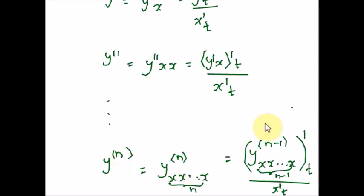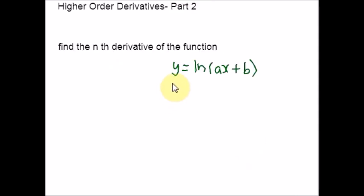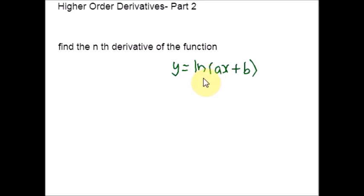Hope you are clear till this. Now let us see a few solved examples. We are going to take examples both on implicit functions as well as parametric form. Here is the first example: find the nth derivative of the function y = ln(ax + b). Let us calculate the first few derivatives using the chain and power rules, because we have the function ln with an inner function ax + b.